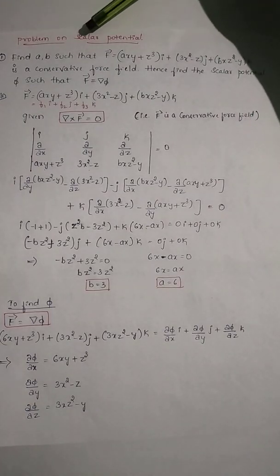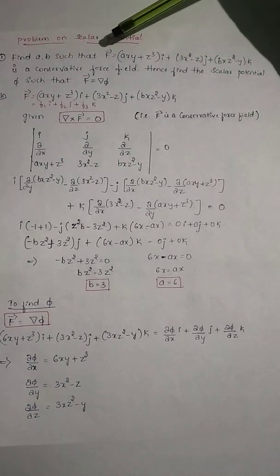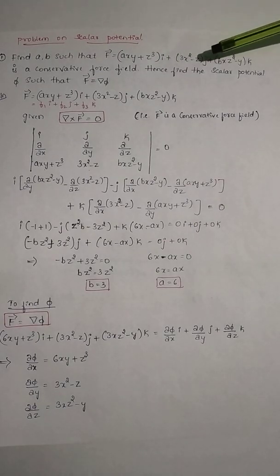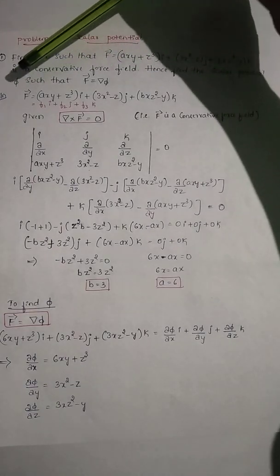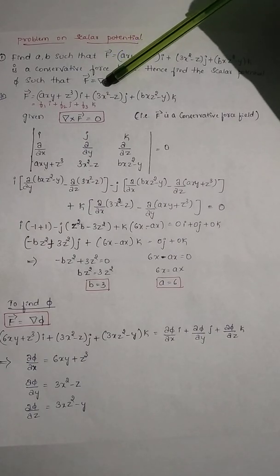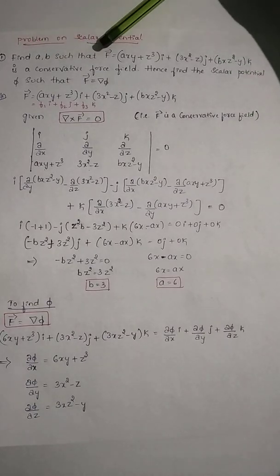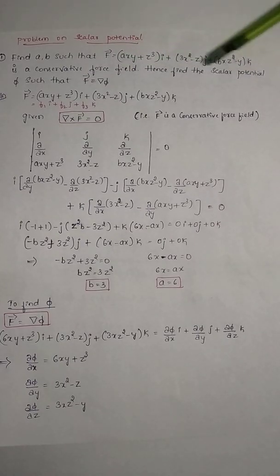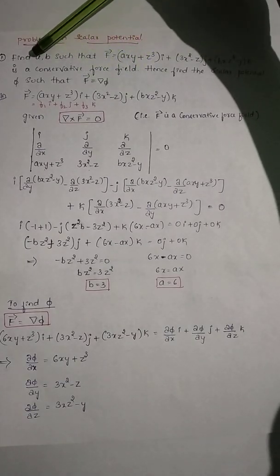Today we will see a problem on finding scalar potential. The problem is: find a and b such that vector F equals (axy + z³)i + (3x² - z)j + (bxz² - y)k is a conservative force field, hence find the scalar potential φ such that vector F equals del φ. There are two parts: first find a and b, then find φ.